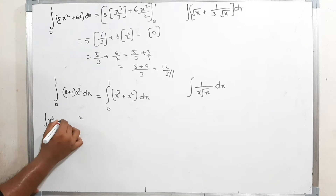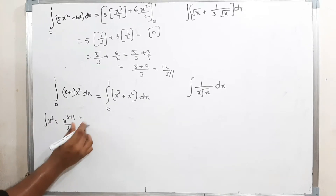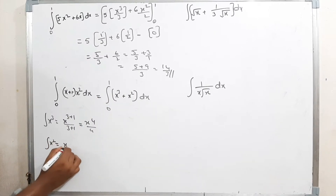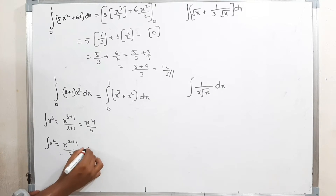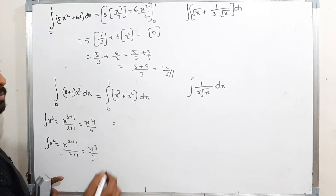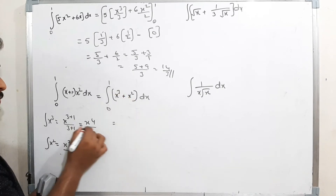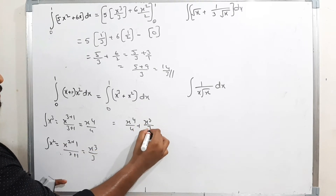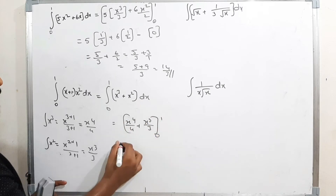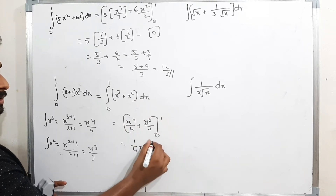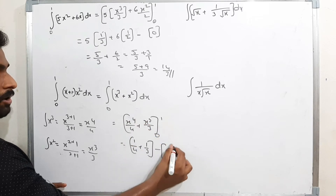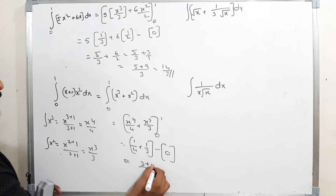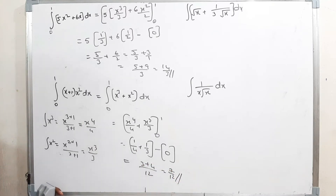The integration of x³ is x^(3+1)/(3+1) = x⁴/4. The integration of x² is x³/3. Applying limits from 0 to 1: keeping 1 gives 1/4 + 1/3. Keeping 0 gives 0. Taking common denominator 12: (3 + 4)/12 = 7/12 is the answer.